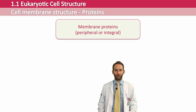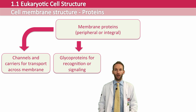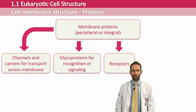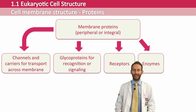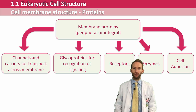Proteins have all sorts of functions. They can form channels through the membrane, which allow certain molecules to pass in and out of the cell. They might have a little bit of carbohydrate attached to them, which would mean they are called a glycoprotein, and can be used for cell signalling or cell recognition. They could act as receptors for hormones and other signal molecules to bind to. They can be enzymes, which means they can catalyse specific reactions. They can also interact with other cell membrane proteins to bind cells together in what we call cell adhesion.